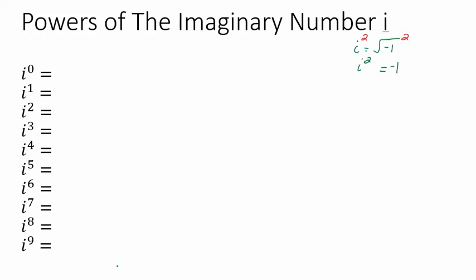We are going to determine what all these expressions are. The first ones are pretty straightforward. i to the 0 power — anything to the 0 power is 1, and that includes i. i to the first power — anything to the first power is itself, so that's i. i to the second power, by definition, is negative 1.